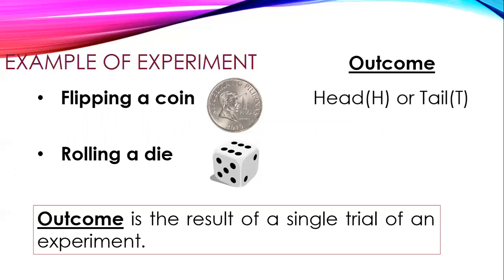The outcome of flipping a coin could be head or tail. In rolling a die, it could be 1, 2, 3, 4, 5, or 6 when we roll a die.